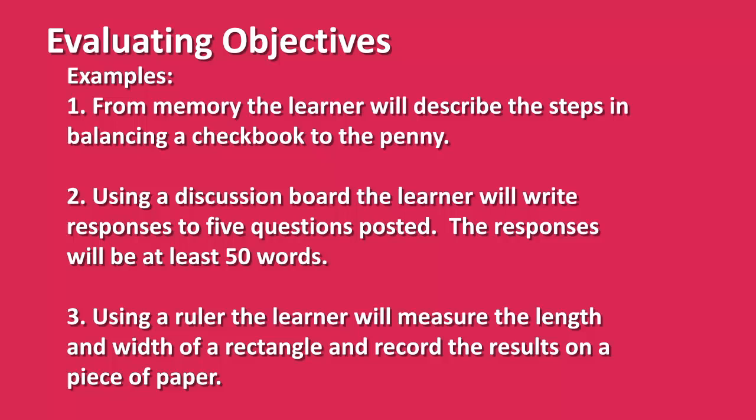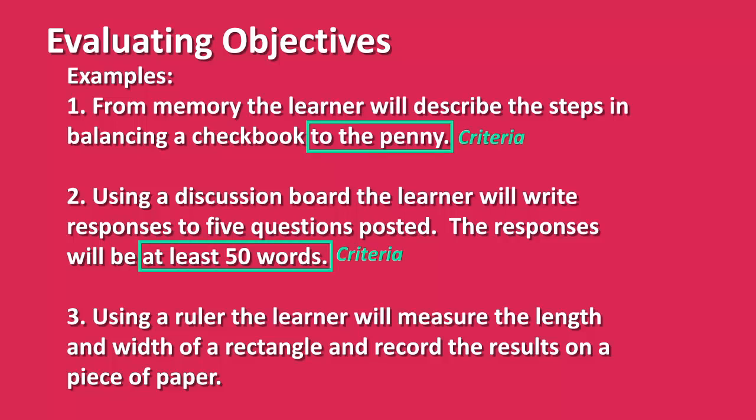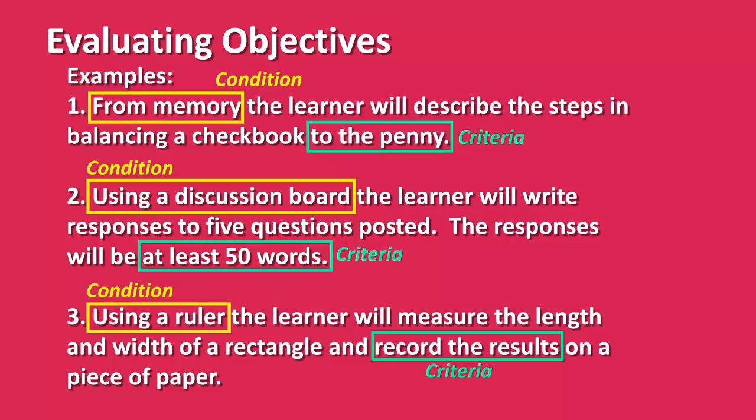After writing the performance objectives, you are going to want to evaluate them. One simple way is to try and write a test item for the objective — if it is difficult to write a test item, then go back and rewrite the objective. Also look at the criteria and determine if it will be observable with the specified condition. This may be easy to do with verbal and intellectual skills, but not as easy with psychomotor or attitude skills. Check the objective for clarity and feasibility, and don't be afraid to use two to three sentences to write the objective clearly.